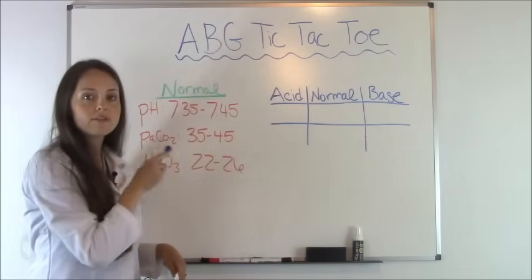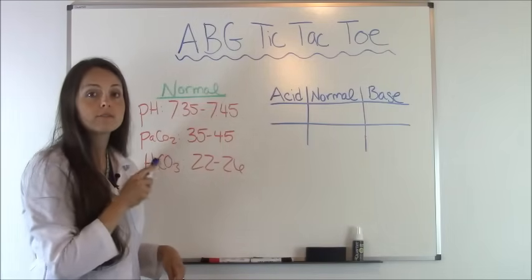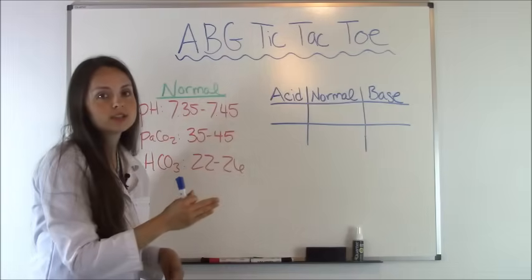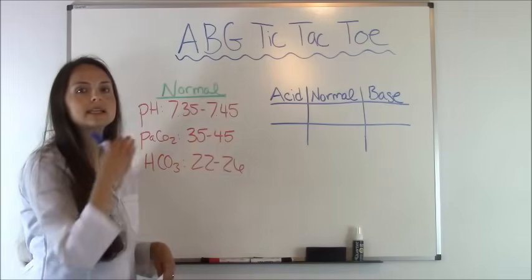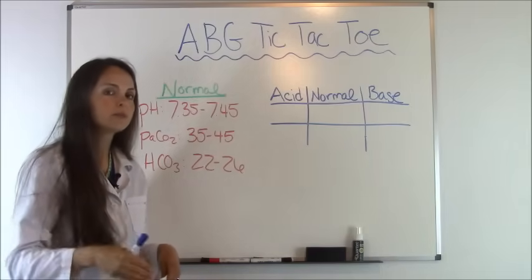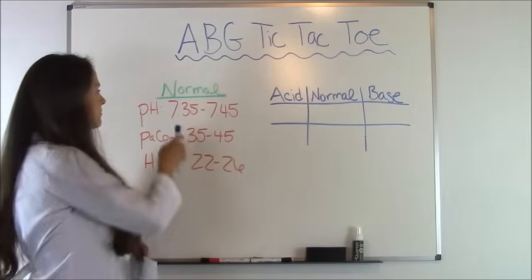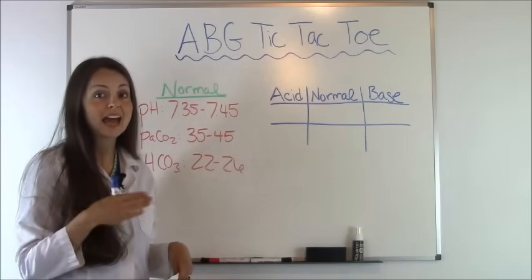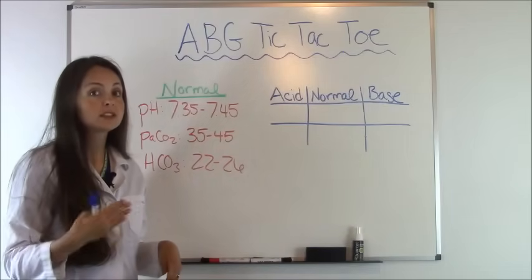pH level normal is 7.35 to 7.45. Anything over 7.45 is a base. Another word for base is alkalotic, which is alkalosis. Anything less than 7.35 is an acid, so it would be acidotic.